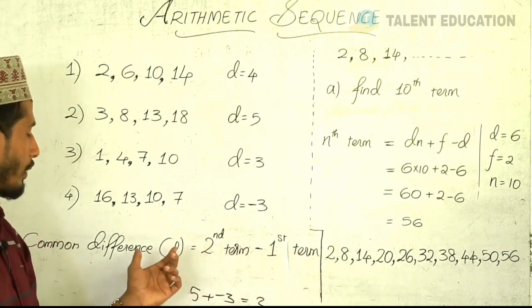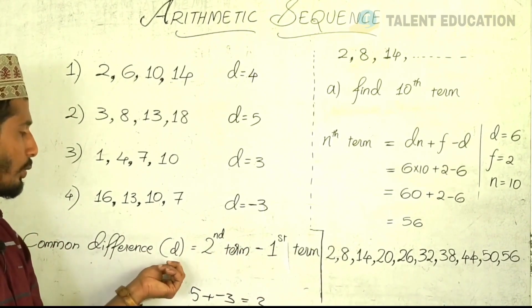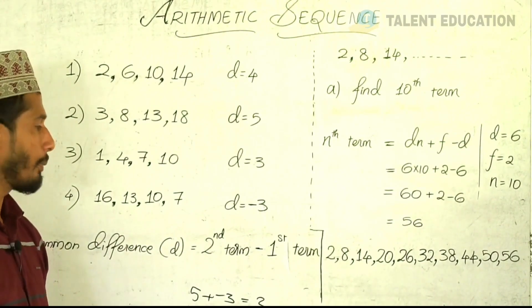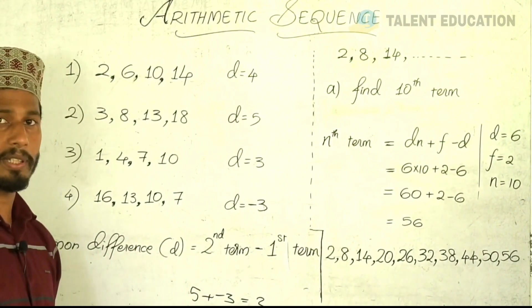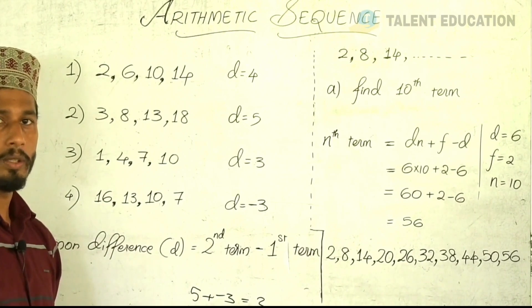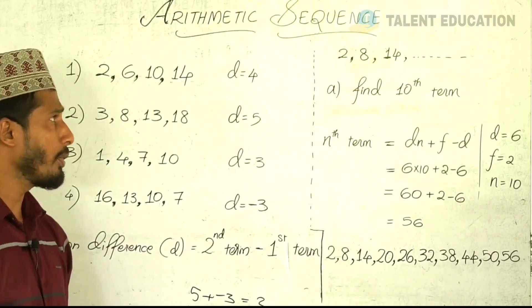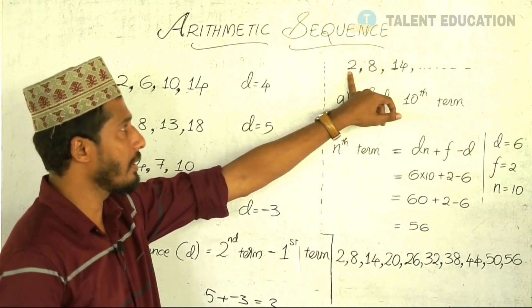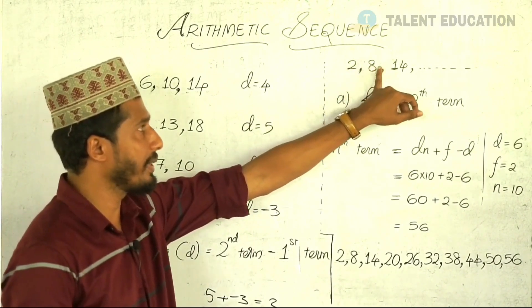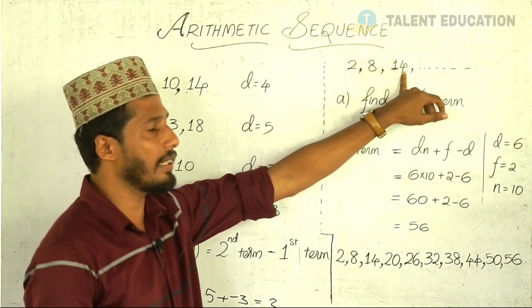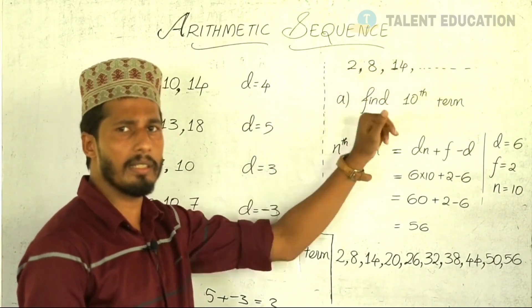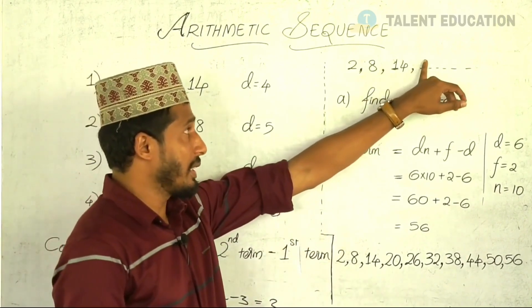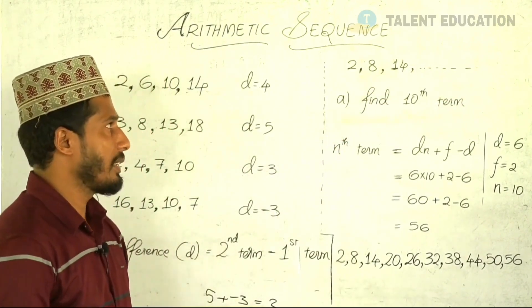The common difference is D. What is the common difference? The common difference is X. The first time is 8, the second time is 8, the second time is 14. Then the second time is 6.